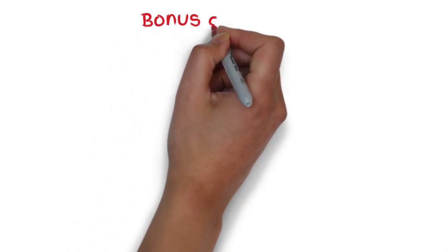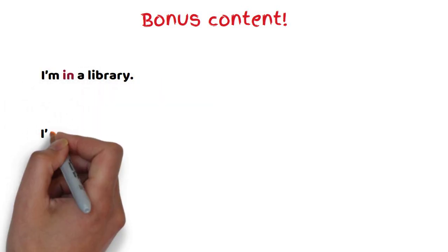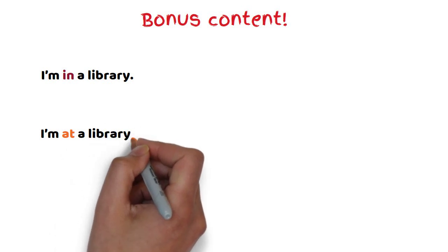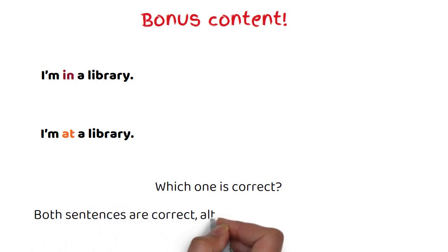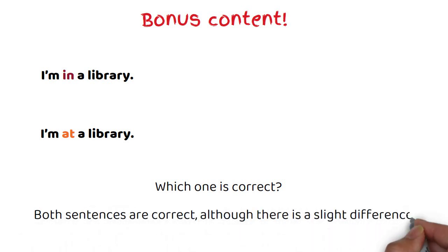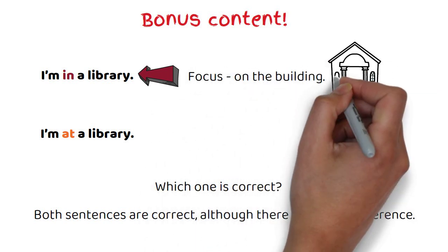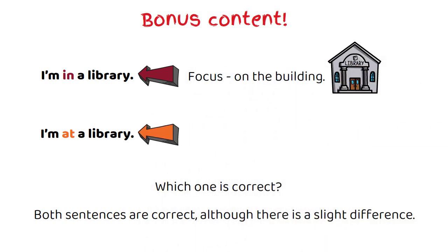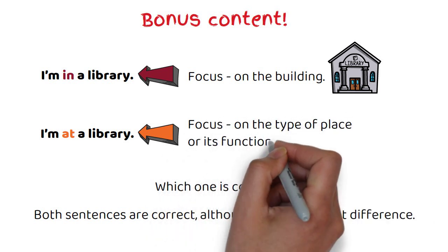Now we have some bonus content. Look at these two sentences: I'm in a library. I'm at a library. Which one is correct? Both sentences are correct, although there is a slight difference. The first one is focusing on the building, and the second one is focusing on the type of place, or its function.